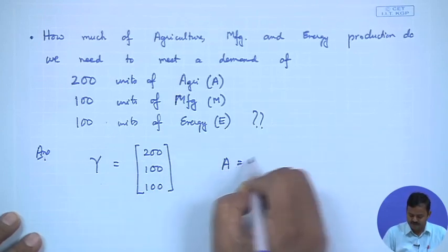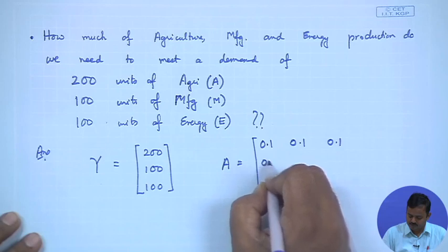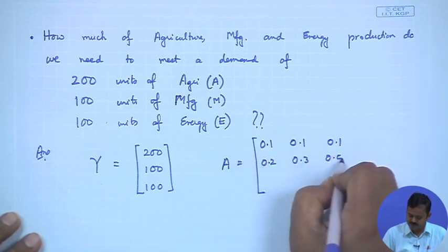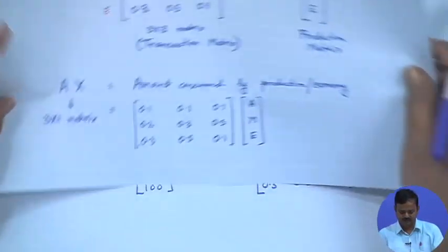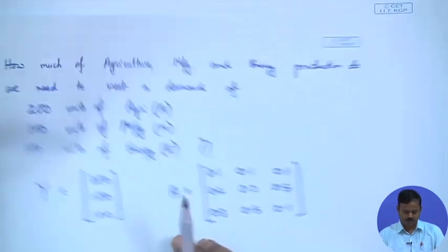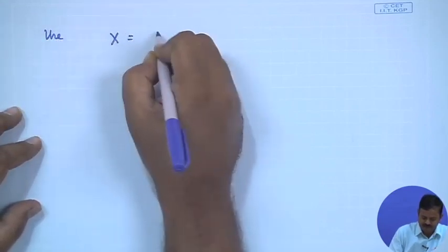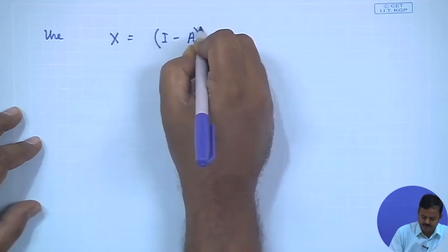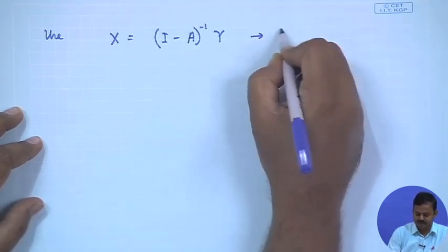The A matrix we had from last time is: row 1 — 0.1, 0.1, 0.1; row 2 — 0.2, 0.3, 0.5; row 3 — 0.3, 0.5, 0.1. We will use the formula x equals (I minus A) inverse times y. This is our input-output method.